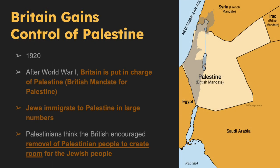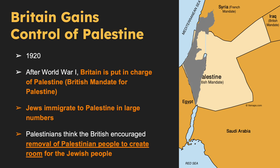Britain gained control of Palestine. In the years following the Balfour Declaration, Jewish immigration to the region increased significantly. Many Palestinians believe the British encouraged the displacement and deportation of the Palestinian people to make way for the Jewish people, while Jewish people see the British as crucial allies in creating the country of Israel.